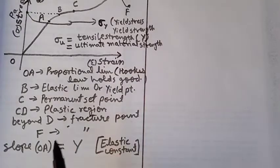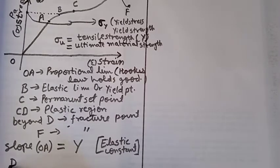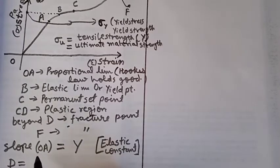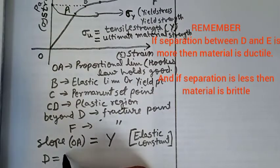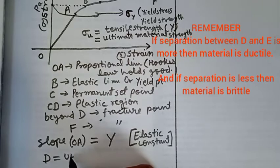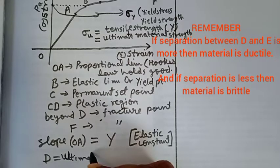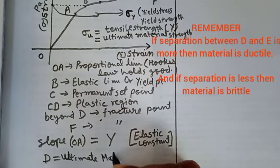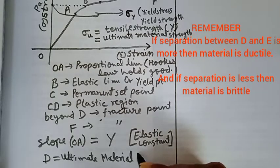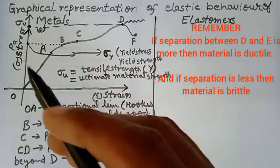Second thing: what we can find is D is the measure of material strength—ultimate material strength.